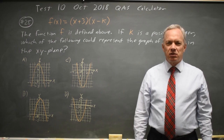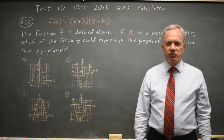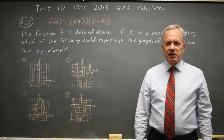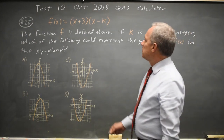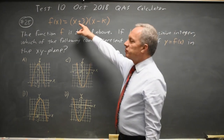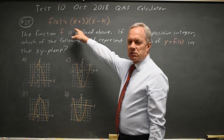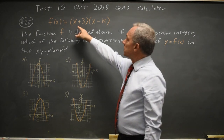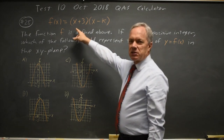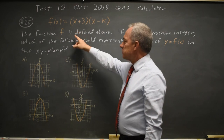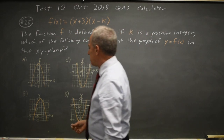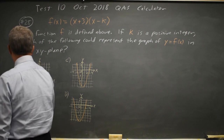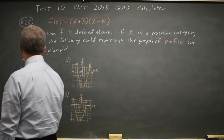This is question 28. College Board gives us a quadratic equation in factored form and asks which graph could be the graph of this quadratic. We notice that if we FOIL this, the leading coefficient is 1 because we get positive 1x squared, so this quadratic has to open up. It's not choices A or B, which open down.